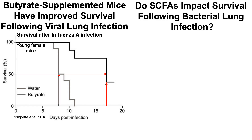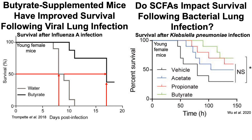So what about survival after a bacterial lung infection? Looking at data for Klebsiella pneumoniae — survival after bacterial infection with Klebsiella bacteria. For vehicle-treated mice not treated with any short-chain fatty acids, average survival after bacterial lung infection was about 80 hours. But all of the butyrate-treated mice were still alive after 80 hours post-infection with Klebsiella bacteria, which strongly suggests a protective role for these short-chain fatty acids in the lung's defense against infection.